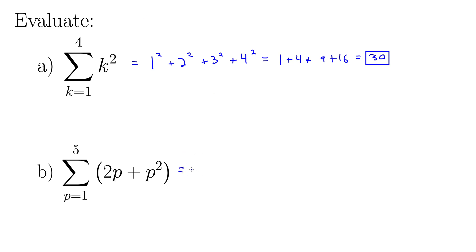Let's see, we plug in p equals 1, we get 2 times 1 plus 1 squared. And then we plug in 2, 2 times 2 plus 2 squared. And then we plug in 3, 2 times 3 plus 3 squared. Plug in 4, 2 times 4 plus 4 squared. And finally we plug in 5, 2 times 5 plus 5 squared. It's all arithmetic from here on out.